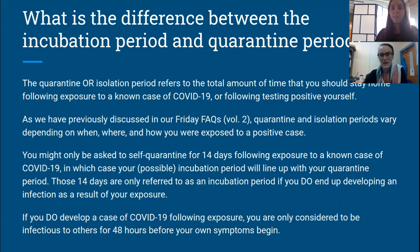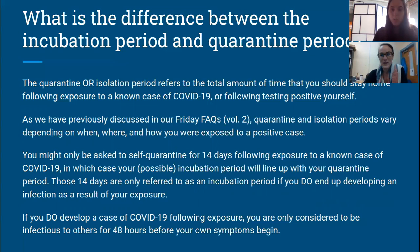What is the difference between the incubation period and the quarantine period? The quarantine period refers to the total amount of time that you should isolate following exposure to a known case of COVID-19, or if you are positive yourself. As previously discussed on volume 2, quarantine and isolation periods vary depending on when, where, and how you are exposed to a positive case, as well as if you can isolate away from other people and if you have symptoms. You might only be asked to self-quarantine for 14 days following exposure, in which case your possible incubation period will line up with your quarantine period. Those 14 days are only referred to as an incubation period if you do end up developing an infection as a result of your exposure.